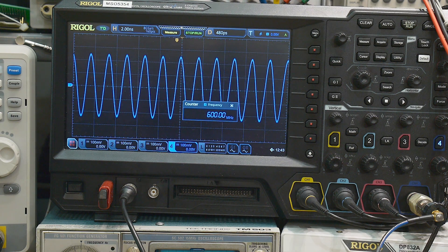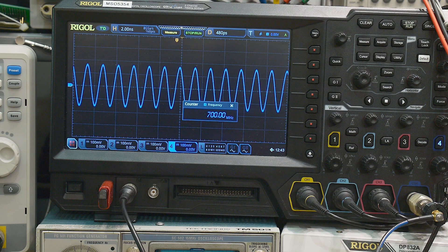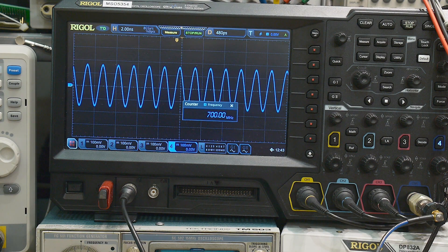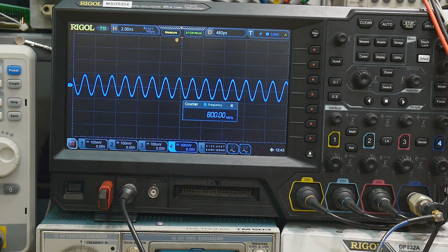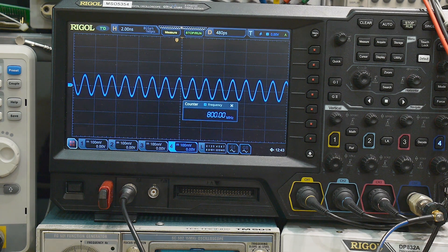600 megahertz. The amplitude's coming down. 700. 800. Now it's quite way down, but it's still operating. And yes, we are still square wave.